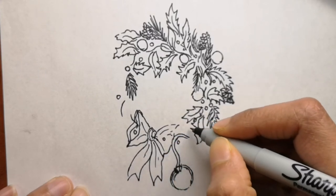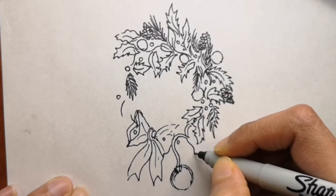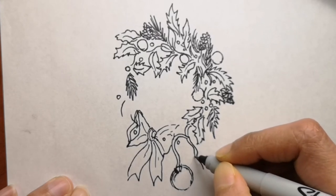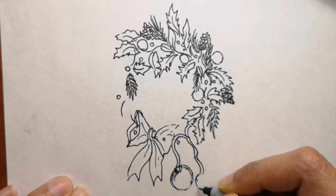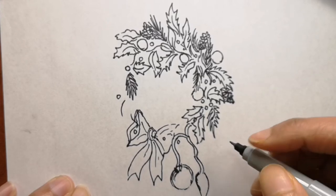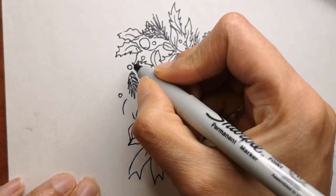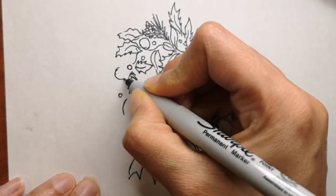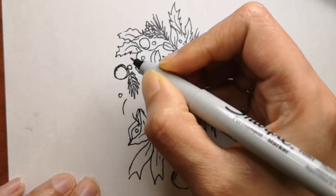The original Christmas wreath was believed to be a tradition that began in Germany in the 1500s by Lutherans. The idea possibly stemmed from the use of wreaths in ancient Greek and Roman times that were used to crown those with significant achievements or community rank or placed on their door.